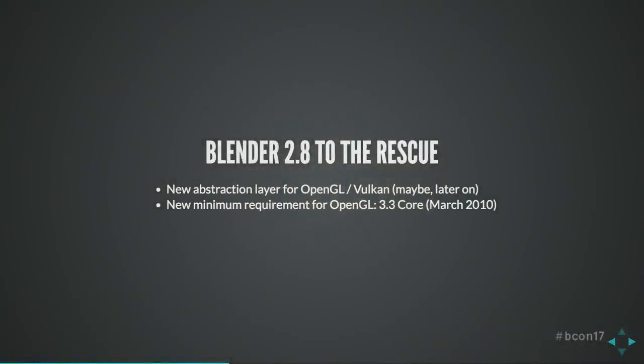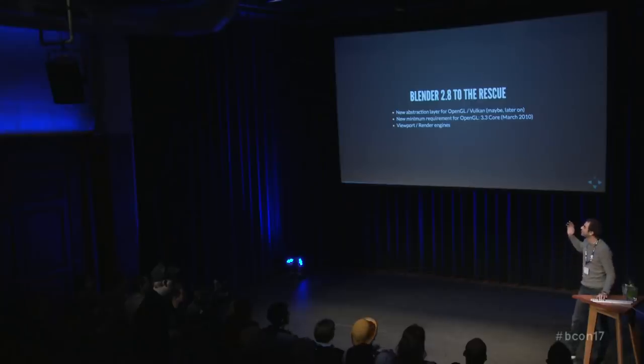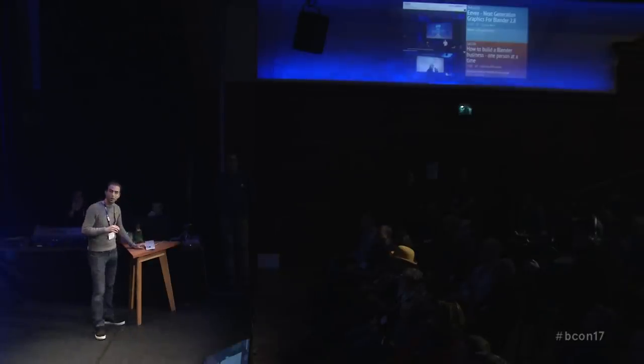The new minimum requirement for OpenGL — which is driving our graphics pipeline — is now 3.3 core, which should be supported by all graphics cards that came out after March 2010. Then there are viewport and render engines. 'Engine' is a really overused word, and in Blender 2.8 everything is an engine. The viewport and render engines are completely the same in the new Blender 2.8. So when you hit F12, the exact same engine renders your final render as the current viewport. That is a very cool feature because we just don't have to develop two things — we develop one and adapt it to the render.